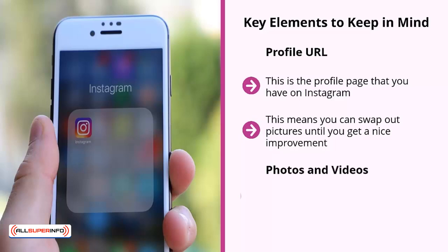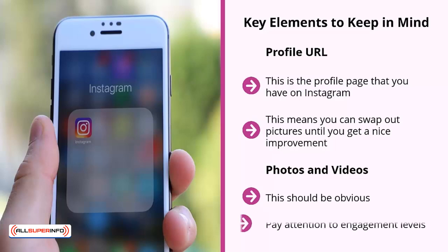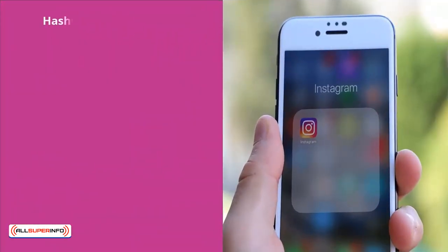Second: Photos and videos. These are the photos and videos that you post. Pay attention to engagement levels and pay attention to click-through. If you notice that certain photos tend to get a lot more clicks, then post more of those photos. Keep posting similar photos until you can reach a sustainable high level of click-throughs.